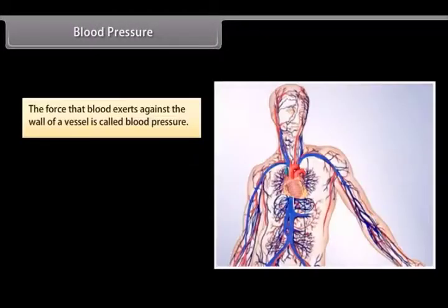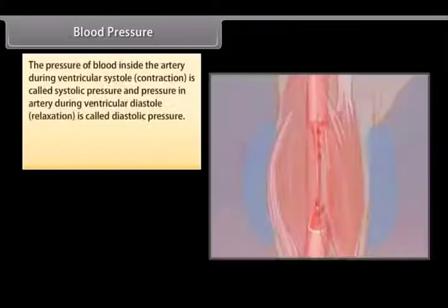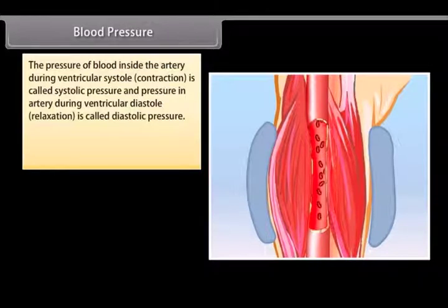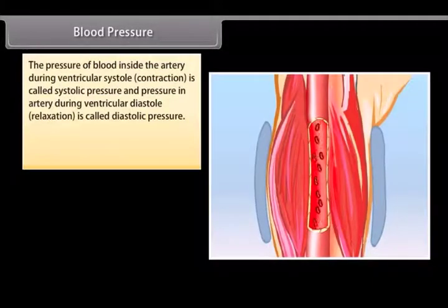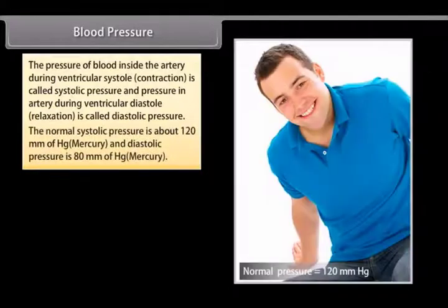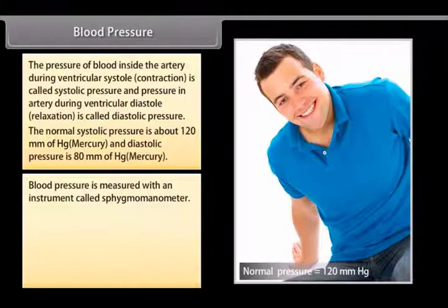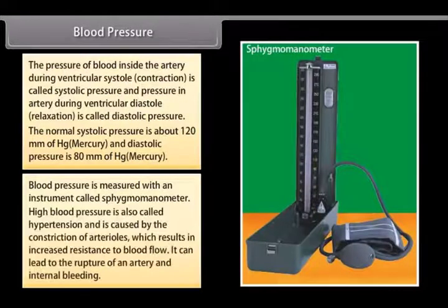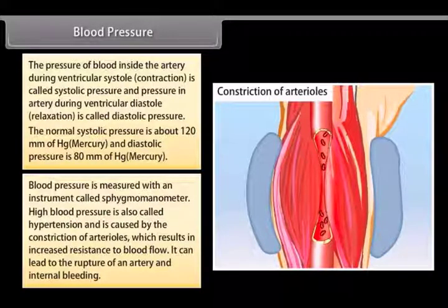The force that blood exerts against the wall of a vessel is called blood pressure. This pressure is much greater in arteries than in veins. The pressure of blood inside an artery during ventricular systole (contraction) is called systolic pressure. Normal systolic pressure is about 120 mm of mercury and diastolic pressure is about 80 mm of mercury. Blood pressure is measured with an instrument called a sphygmomanometer. High blood pressure, called hypertension, is caused by constriction of arterioles, resulting in increased resistance to blood flow, and can lead to the rupture of an artery and internal bleeding.